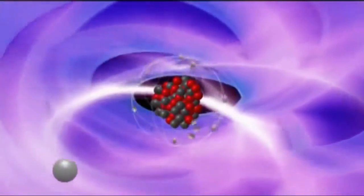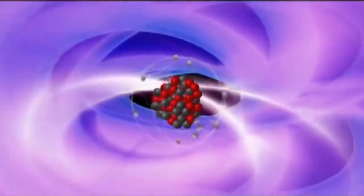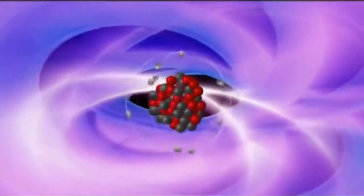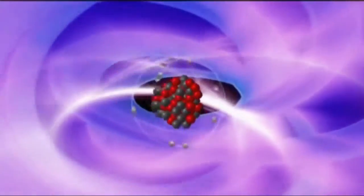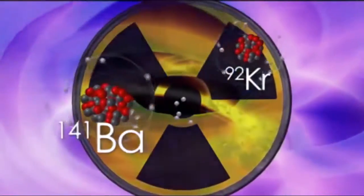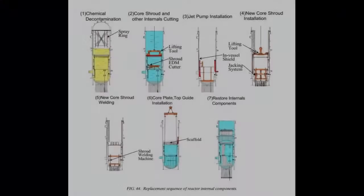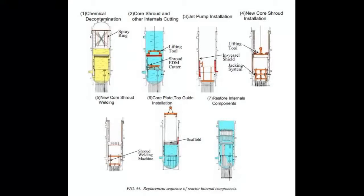This is why they have to replace reactor shrouds every so often, because the steel becomes so brittle. We're used to different types of steel being used in infrastructure, and aluminum and cadmium and nickel being used in airline skins, but these are all affected in similar ways.